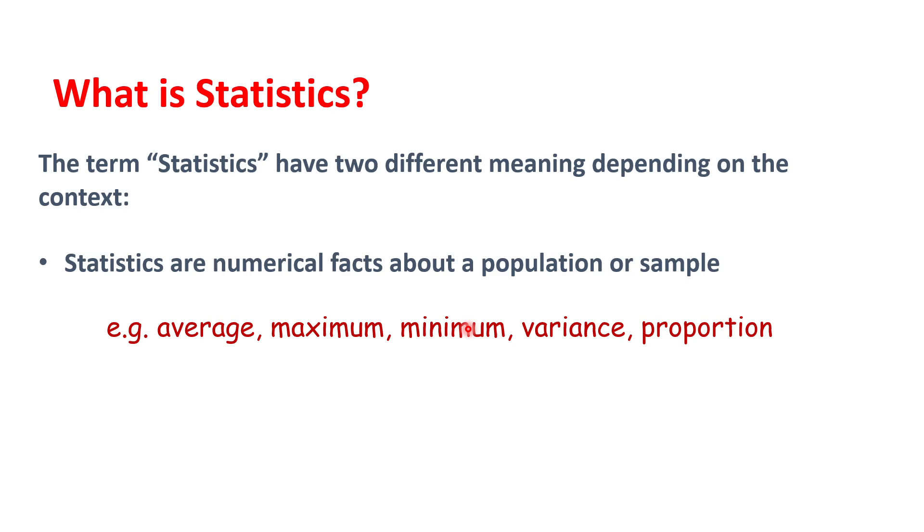These are measurements. They're numerical measurements and they're facts. Like, for example, the maximum age of students at CCSF is 85. That is a fact, so that is a statistic. Statistics could also be characteristics, and we'll talk a little bit more about this in Chapter 2.